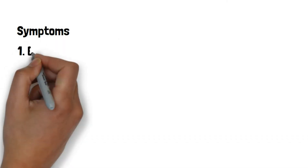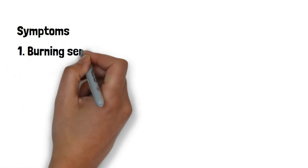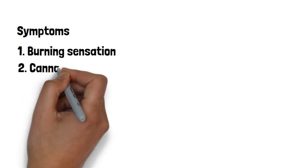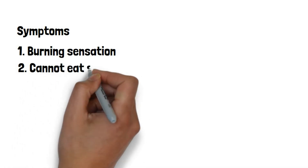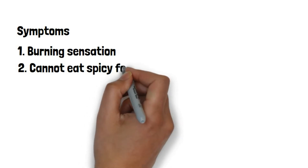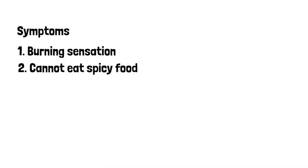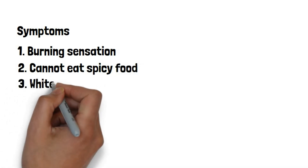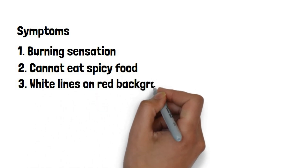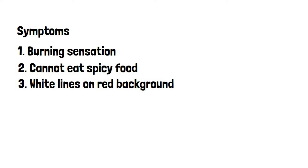The primary symptom of oral lichen planus is a burning sensation. This feature is observed in almost 90 to 95 percent of patients; they find difficulty in eating spicy food. In severe conditions, this burning sensation can increase to such a level where the patient senses burning even during drinking water. In most cases we can see white lines in the lesion area on a red or inflamed background.